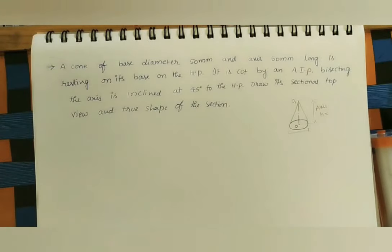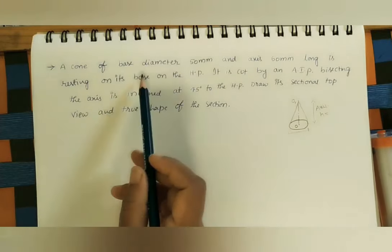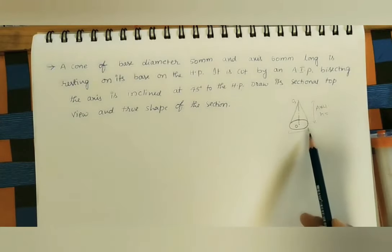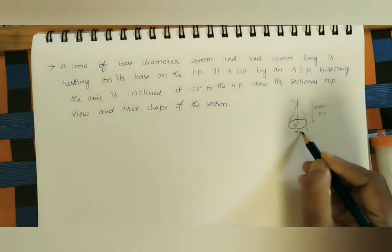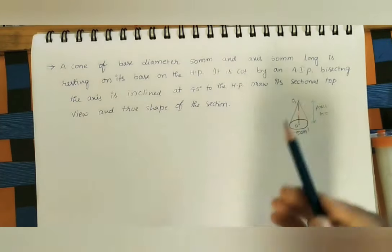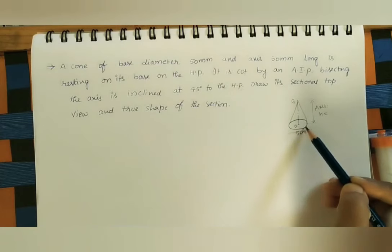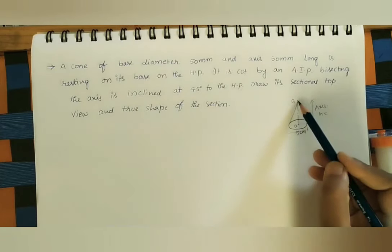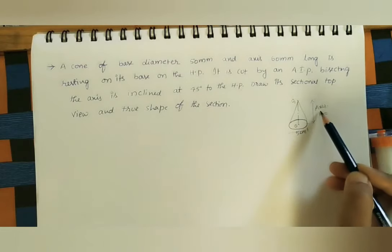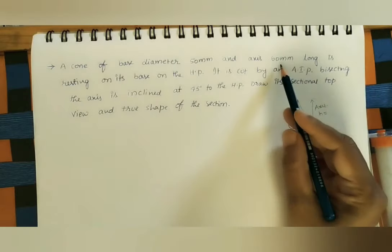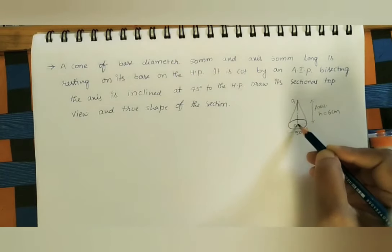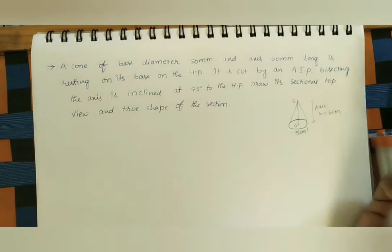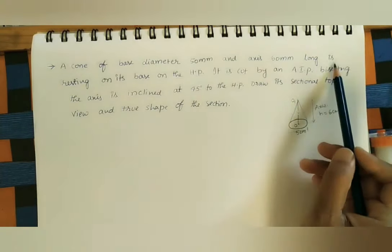Welcome to my channel. In today's class, let us discuss sections of solids. The given solid is a cone. First, let us take the given data: a cone of base diameter 50 mm. As we know, the base is the circular part of the cone, so this diameter is 5 centimeters. The axis is 60 mm long — axis means the height of the cone.